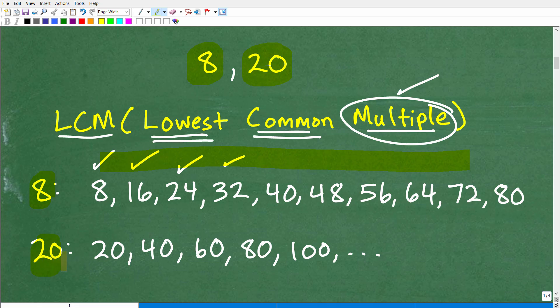Now let's look at multiples of 20. So 20 times one is 20, that's a multiple of 20. 20 times two is 40, so 40 is a multiple of 20. You get the idea. 60 is a multiple of 20 because 20 times three is 60. These are multiples of these respective numbers here. These are multiples of eight, these are multiples of 20.